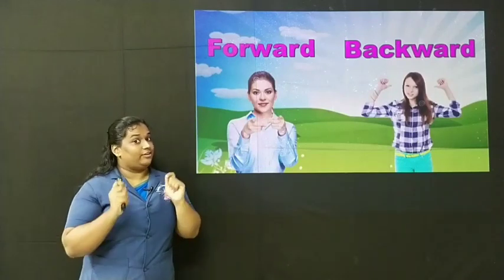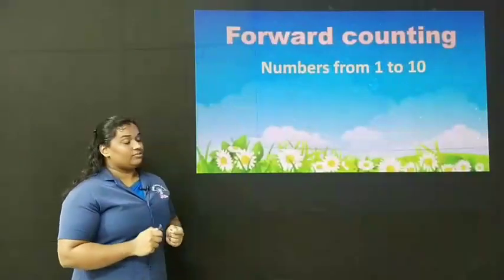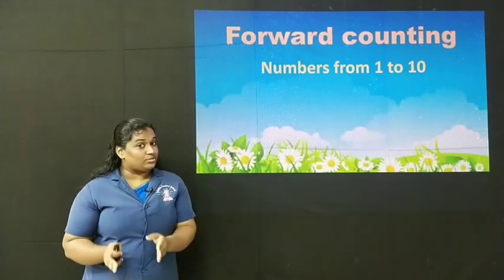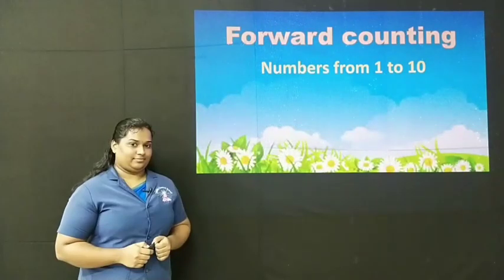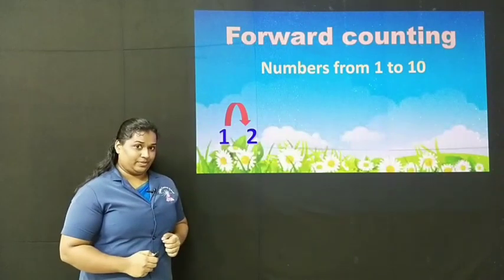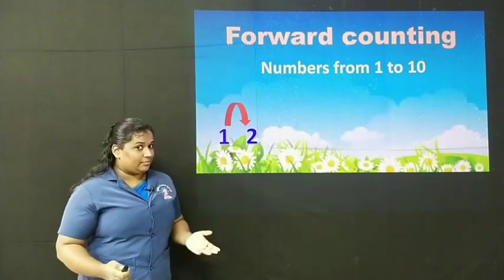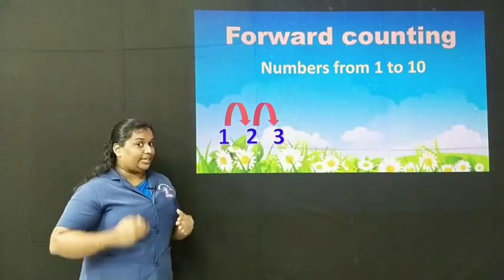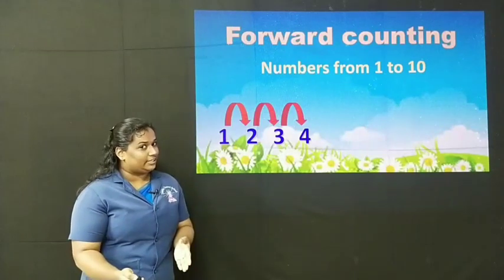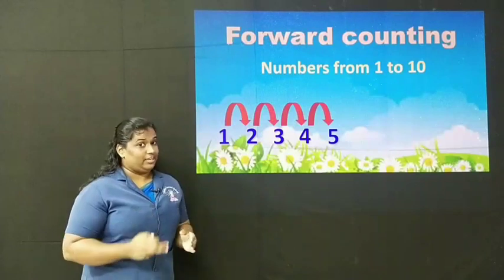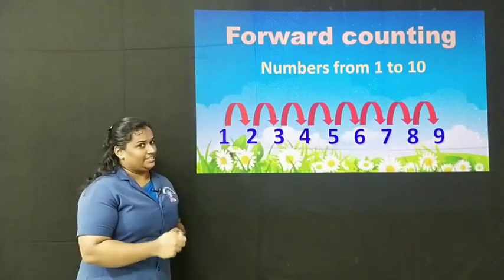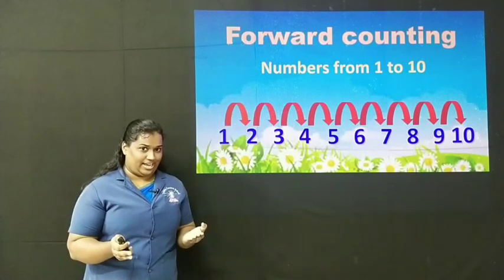So now let us go for the forward counting of numbers. Forward counting is counting from 1 to 10. When we count from 1 forward, we will get the number 2. From 2, count forward, you will get 3. From 3, again count forward, you will get 4. From 4, if you count forward, you will get 5. Similarly, when we count forward, we will get the numbers 6, 7, 8, 9 and 10. This forward counting you already know, right?